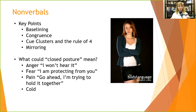So you want to look for cue clusters and the rule of four — four clues that tell you how the person's doing. Look at their legs, arms, face, eyes, eyebrows — something — to get a more global picture of what's going on.